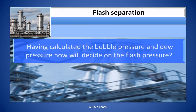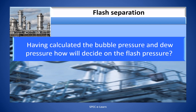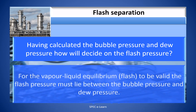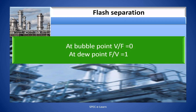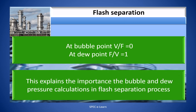Having calculated the bubble pressure and dew pressure, how will you decide on the flash pressure? For vapor-liquid equilibrium to be valid, the flash pressure must lie between the bubble pressure and dew pressure. At the bubble point, V/F = 0. At the dew point, V/F = 1. This explains the importance of bubble and dew pressure calculations in the flash separation process.